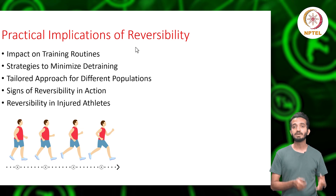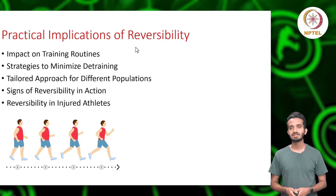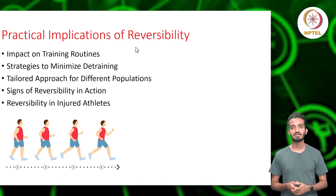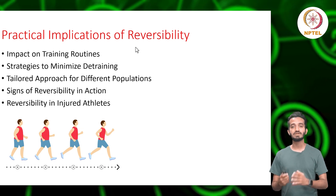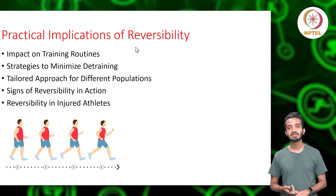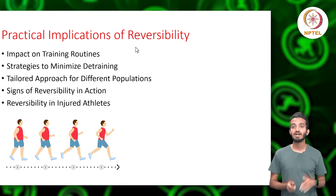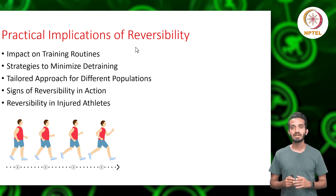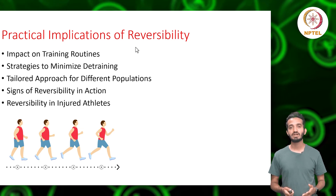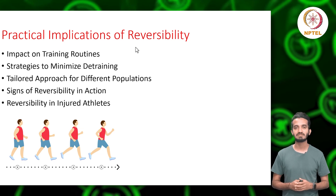The overarching lesson here is the need for personalization. Every individual is unique, and so is their response to breaks in training. Recognizing where one stands on the reversibility spectrum can guide decisions on training frequency, intensity, and recovery. For beginners, the mantra should be consistency — they need to engage regularly to lay down a strong foundation. Older adults, on the other hand, should prioritize resistance training to counteract the natural challenges age presents.